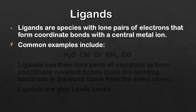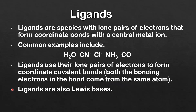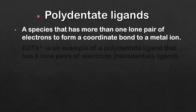Common examples of ligands include H2O (water), the cyanide ion, the chloride ion, ammonia, and carbon monoxide. Ligands use their lone pairs of electrons to form coordinate covalent bonds, where both bonding electrons in the bond come from the same atom. Ligands can also be classed as Lewis bases, because they donate their lone pairs of electrons to the central metal ion, which is classed as the Lewis acid.